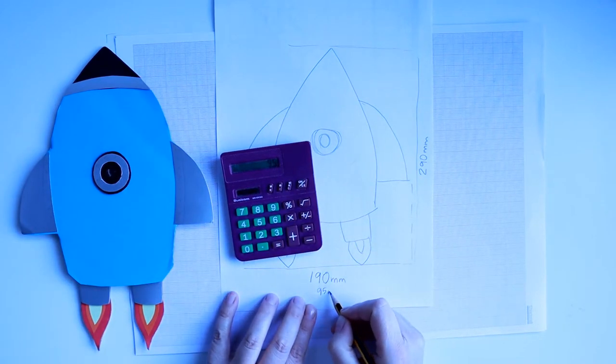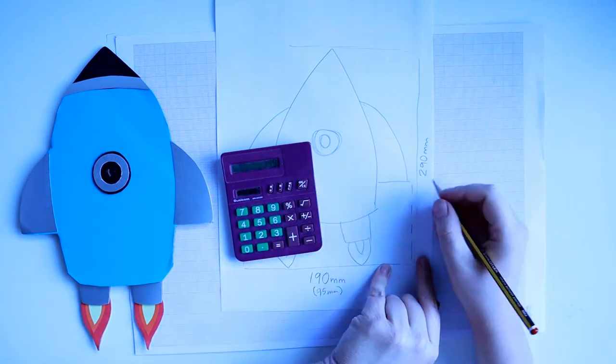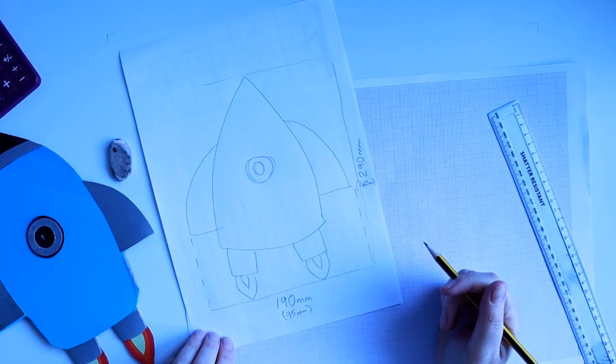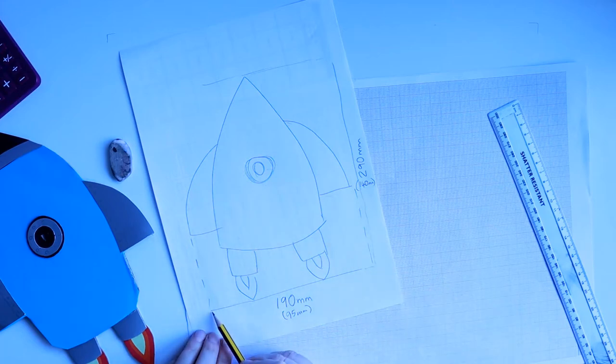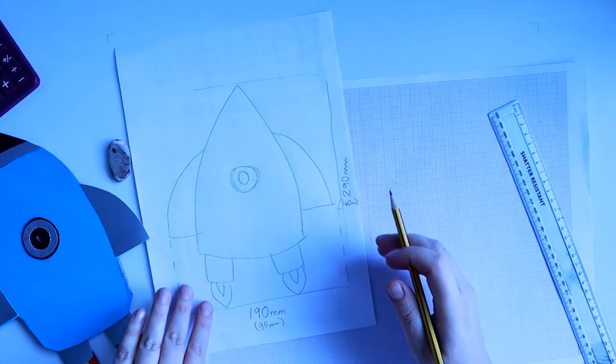Okay, so that's in millimeters. I'm just going to write these measurements underneath. So basically, I want to draw a faint box on my grid paper that's 95 by 140.